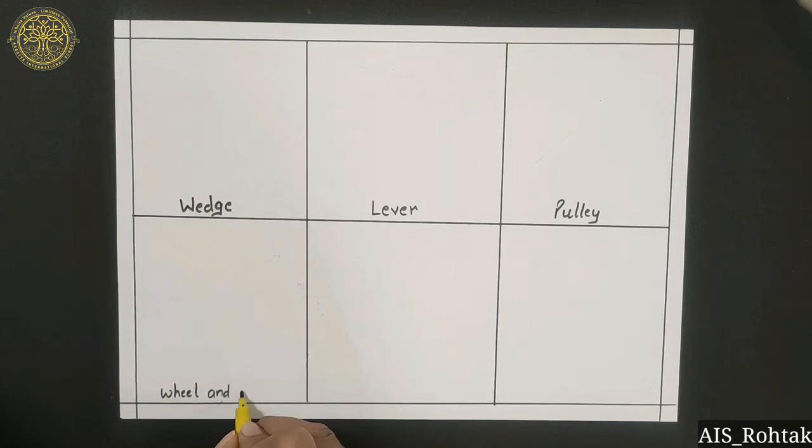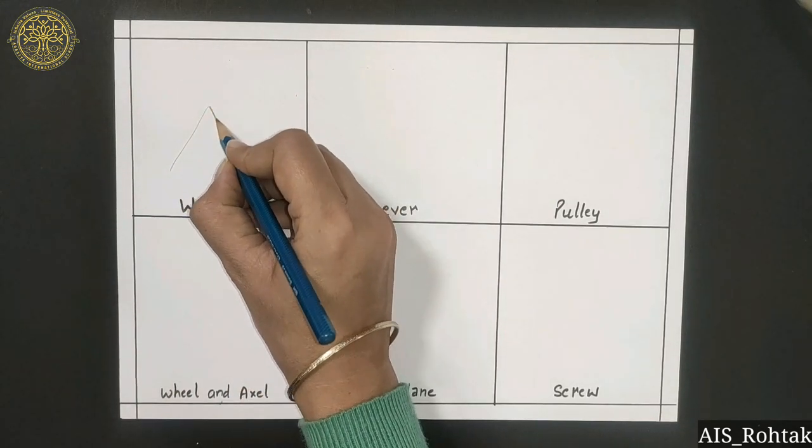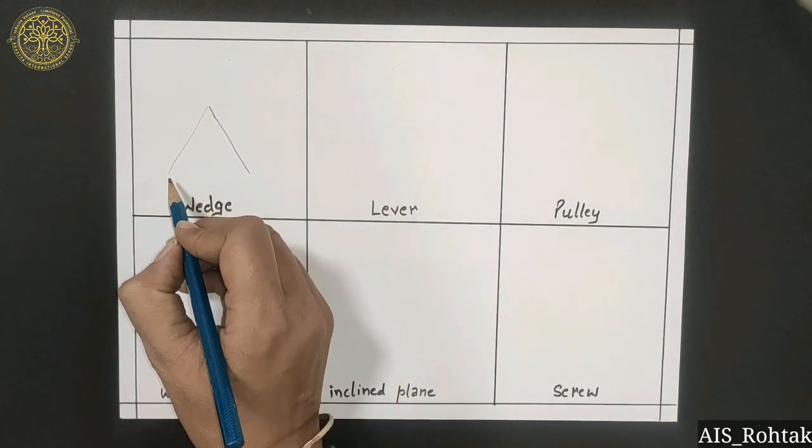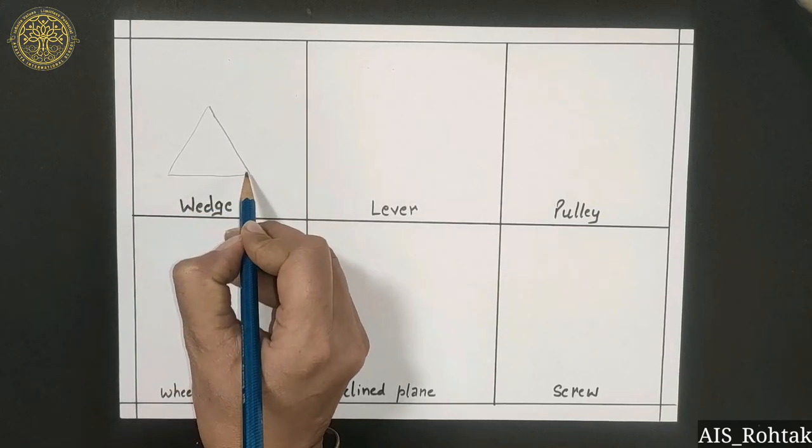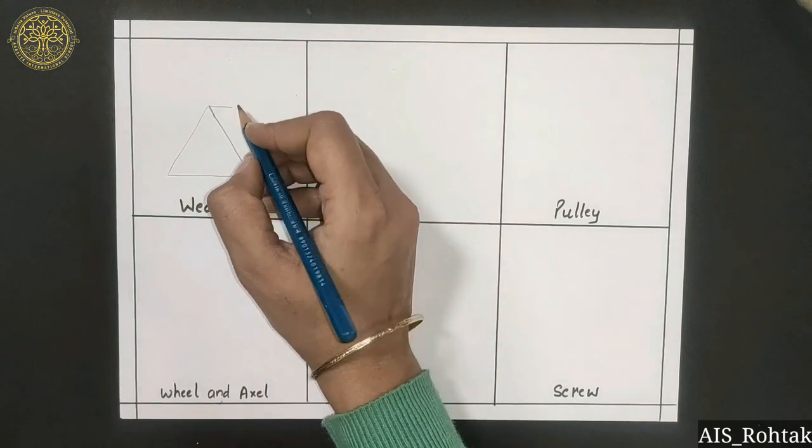wheel and axle, fifth is inclined plane, and sixth one is screw. Right, so let's start with the wedge drawing. Firstly we draw a triangle like this, then we give it a look of 3D. For this we draw some